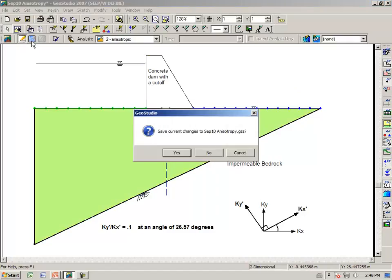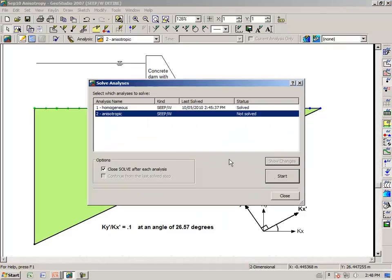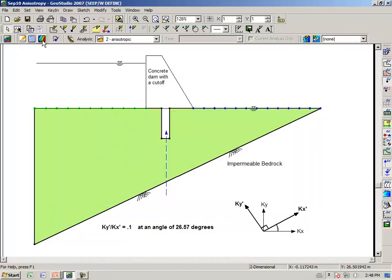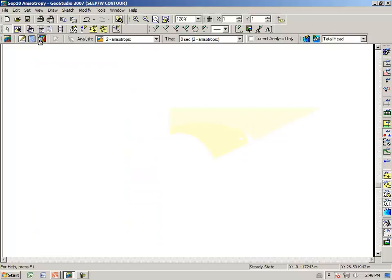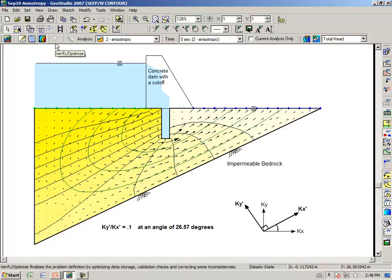And reanalyze the problem. Number two. And going to the results view. We now see that we have anisotropic flow.